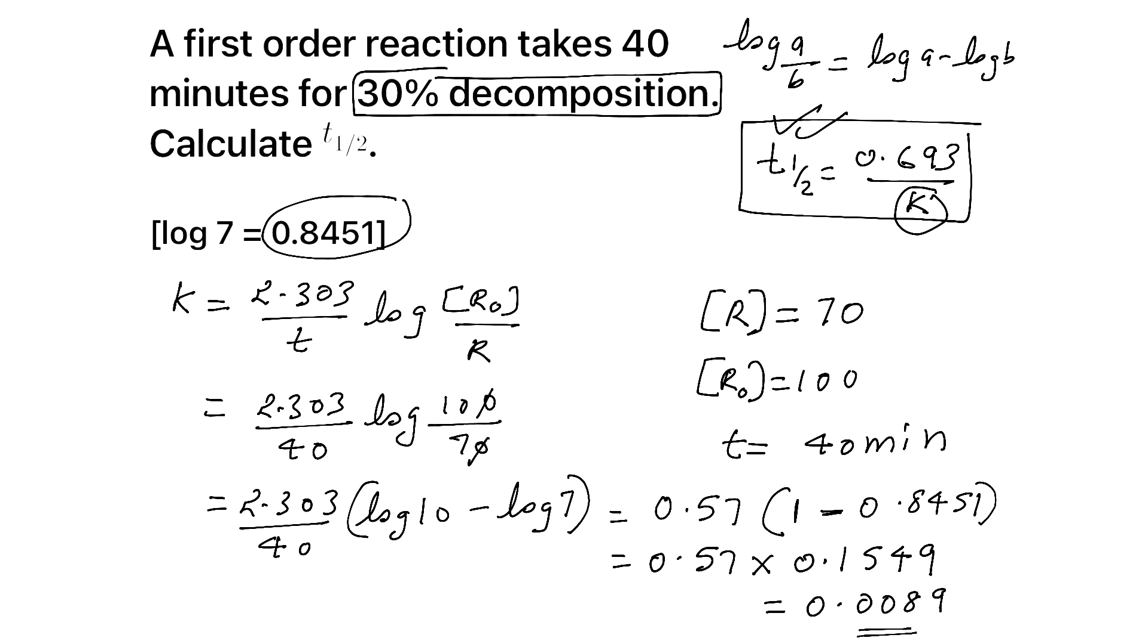That's it. So we got K. Now, we are supposed to substitute that value here. And you will be getting T half, okay? T half. We got K, now T half. What is T half? T half is 0.693 by 0.0089. You can do the division by yourself, correct? You will be getting like 77.86.